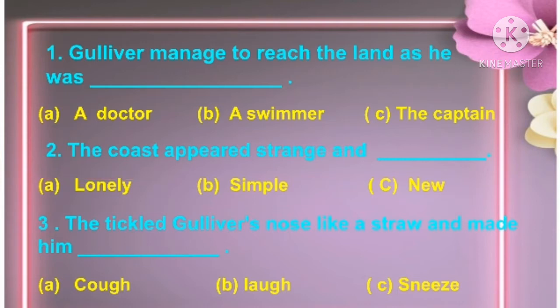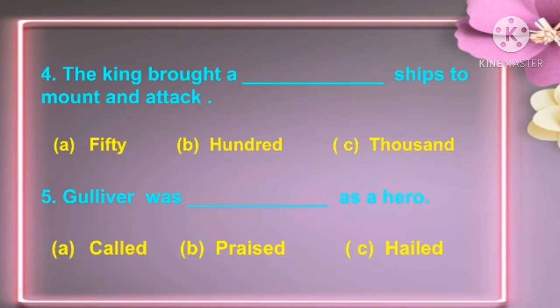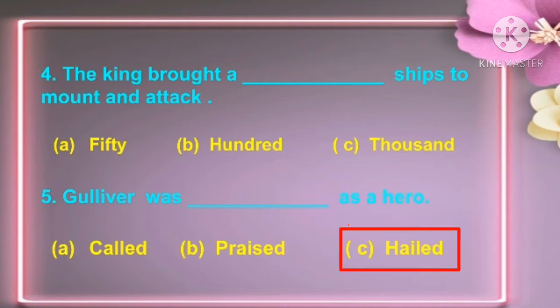Third: what tickled Gulliver's nose like a straw and made him cough / laugh / sneeze? The answer is sneeze. Fourth: the king brought a dash ships to mount an attack — fifty / hundred / thousand. The answer is hundred. Fifth: Gulliver was dash as a hero — called / prized / held. The answer is held.